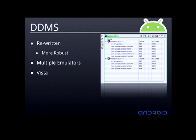The first one is DDMS, the debugging and management system for Android. It has a bunch of new features, but probably the most important is the ability to run multiple emulators on the same machine at the same time — useful if you're developing applications that need to work peer-to-peer. It's also a lot more robust, and it works with Vista now.